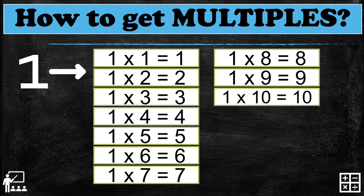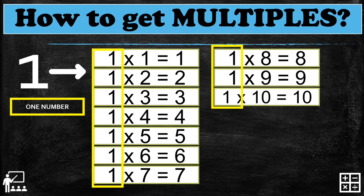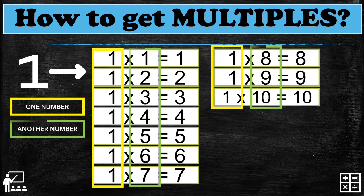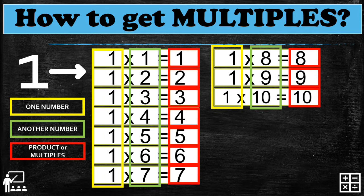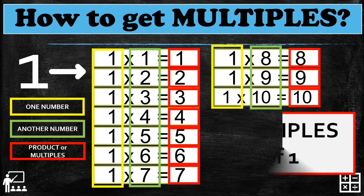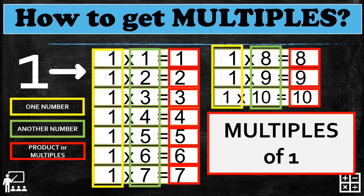All of these have one, so one is our base number. The multiplier is what we call the other number, and the product — the multiples — are the answers in red. So in this table, the multiples of one are: one, two, three, four, five, six, seven, eight, nine, and ten. This table is what you call the multiples of one.